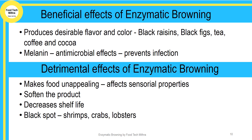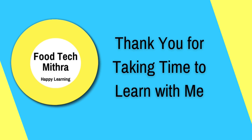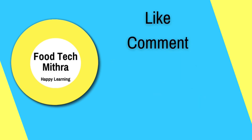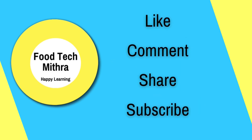Some detrimental effects of enzymatic browning are that the product may get softened, there may be a decrease in shelf life, and there will be formation of black spots on seafoods like shrimps, crabs, and lobsters. Overall, it makes the food unappealing and affects the sensorial properties of the food. Thanks for watching — if you liked the video, kindly comment and share with your friends, and don't forget to subscribe.